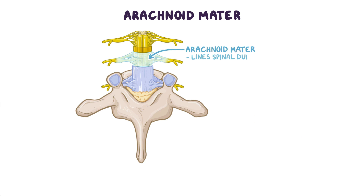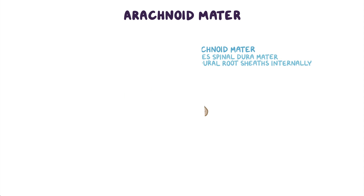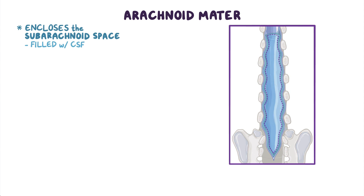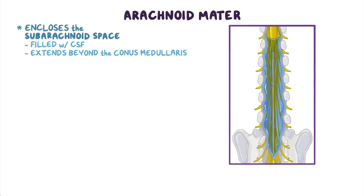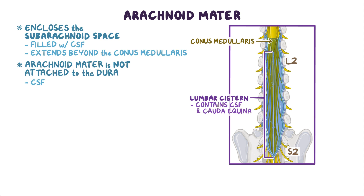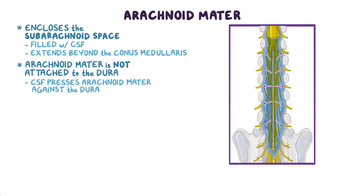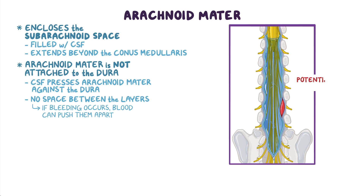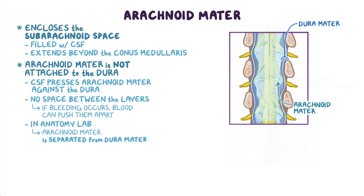The arachnoid mater lines the spinal dura mater and the dural root sheaths internally, enclosing the subarachnoid space, which is filled with CSF. Inferiorly, the subarachnoid space extends beyond the conus medullaris. The space inferior to the conus medullaris, extending from L2 to S2, is called the lumbar cistern, and it contains CSF and the cauda equina. The arachnoid mater is not attached to the dura; rather, CSF presses the arachnoid mater against the dura. If bleeding occurs, blood can push them apart, creating a potential subdural space. In cadavers, the arachnoid mater appears separated from the dura because there is no CSF to press them together.